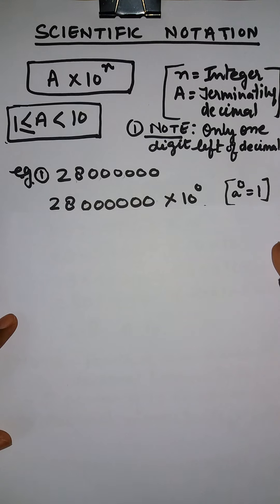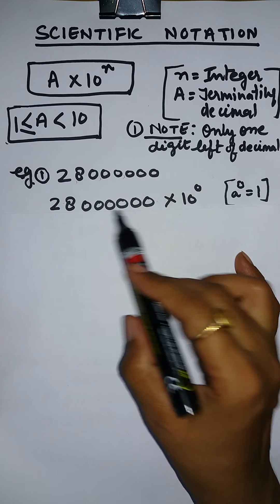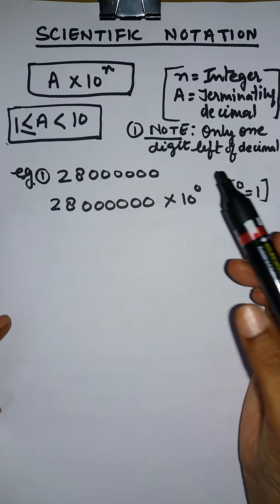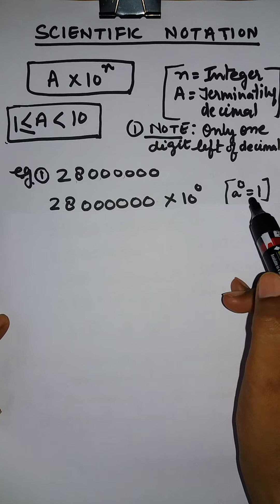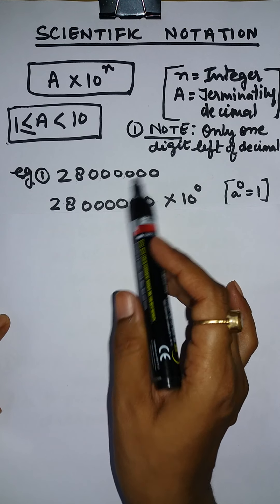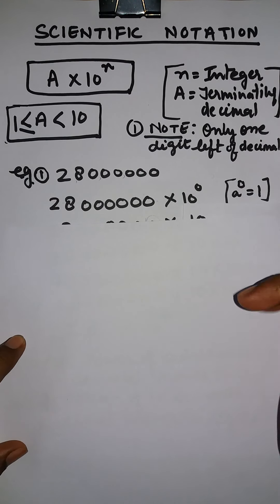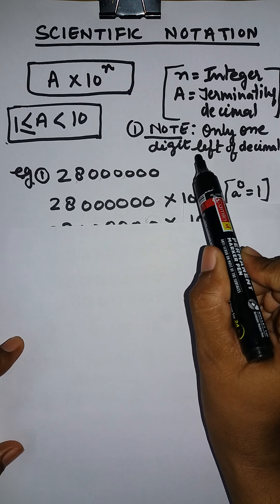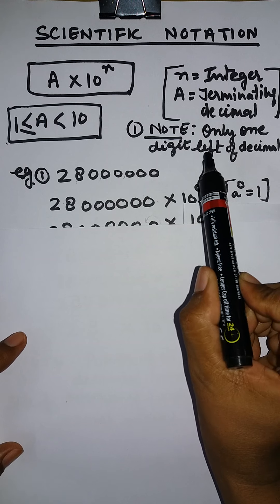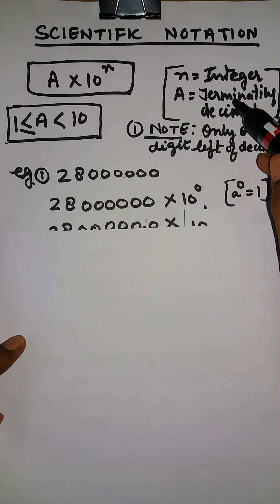By using the law of exponent — a raised to the power 0 equals to 1 — we can rewrite the same number in this way. This number and this number are the same, as 10 raised to the power 0 equals nothing but 1. So the value of this number doesn't change. Now, according to this note, we need to have only one digit to the left of the decimal because it is a terminating decimal.